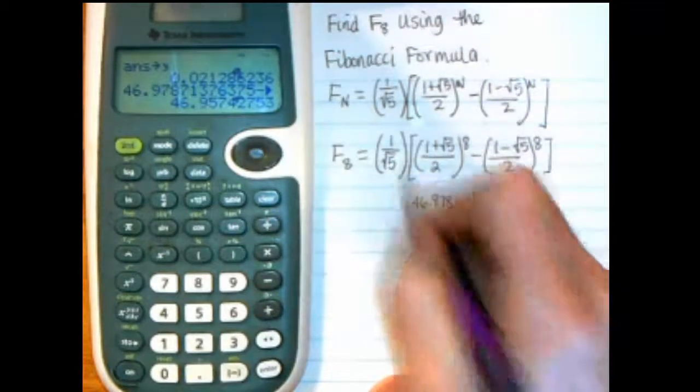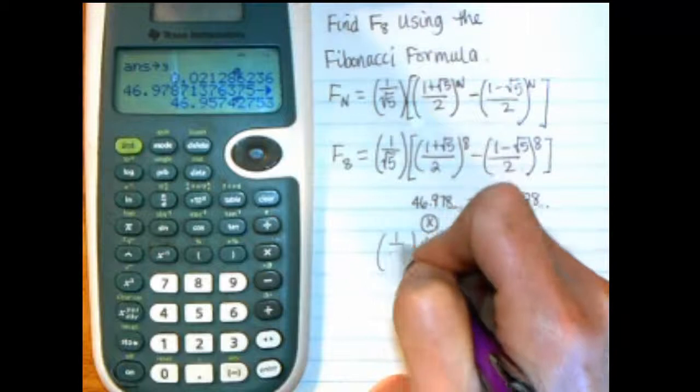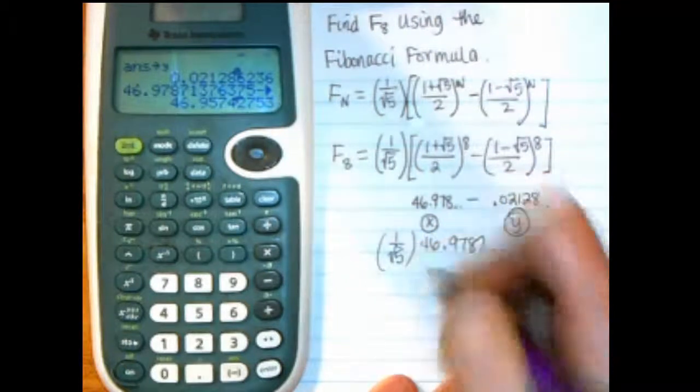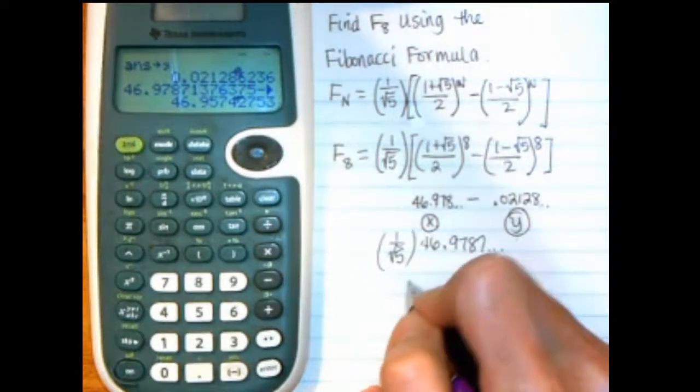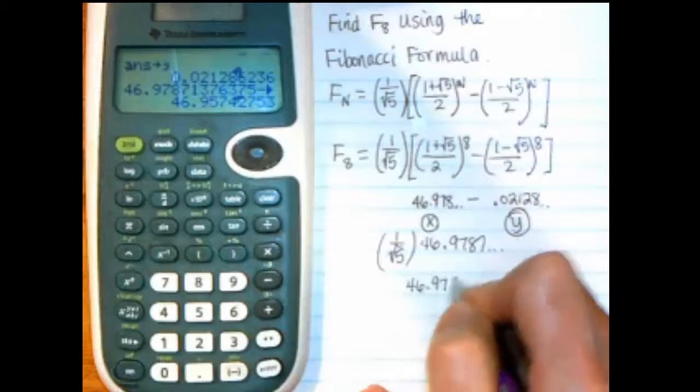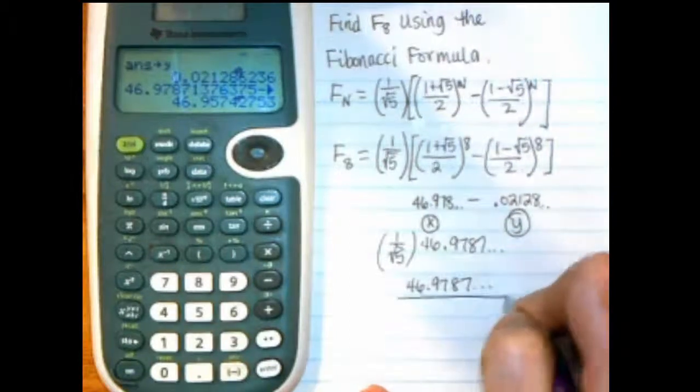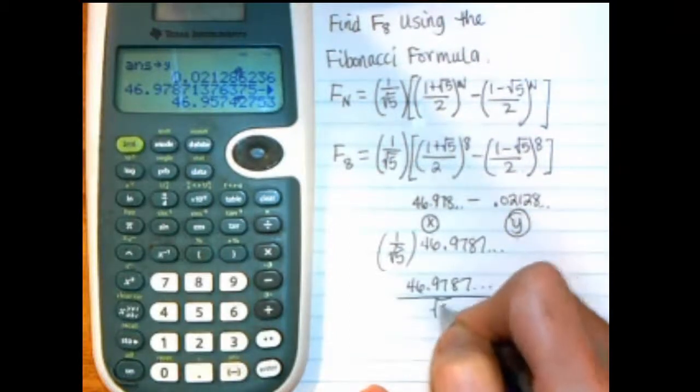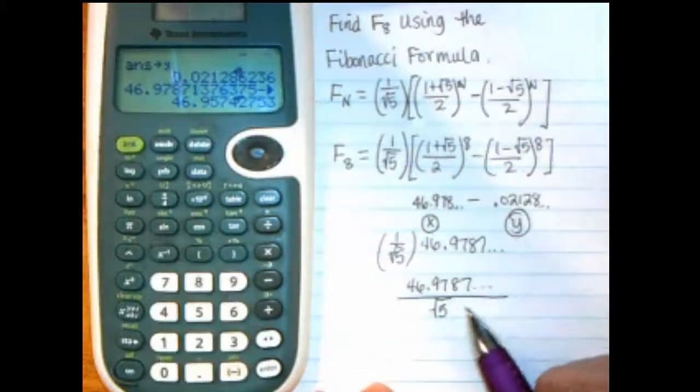And then remember I want to multiply that by 1 over the square root of 5. And that's the same thing as doing the 46.9787, on and on, divided by the square root of 5. So that's how I want to use it on the calculator.